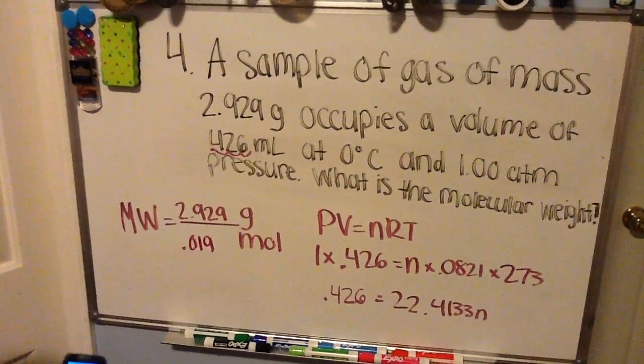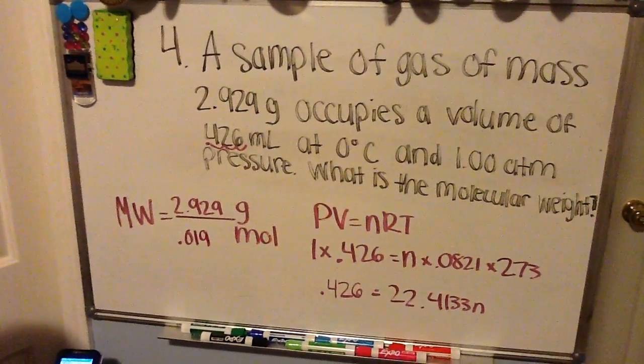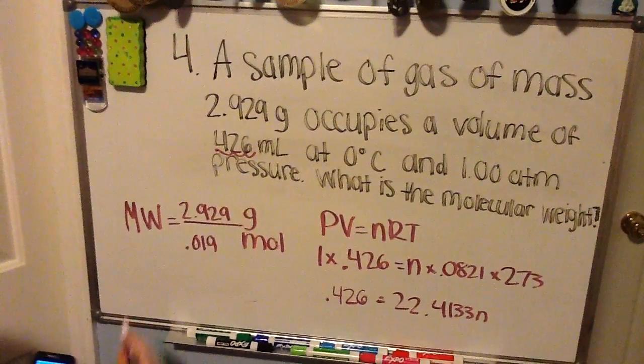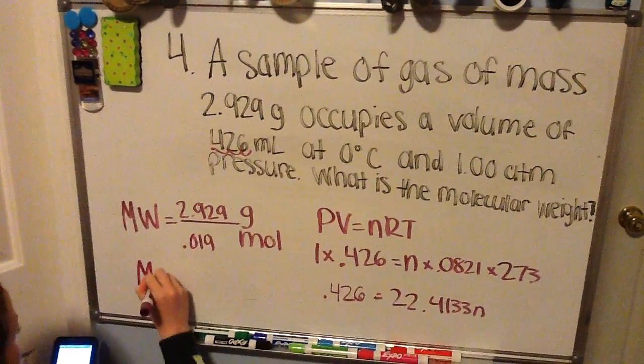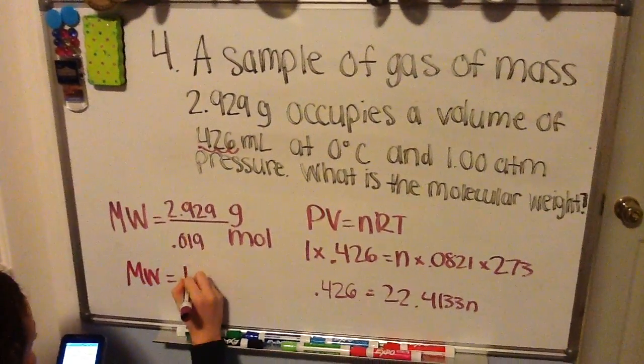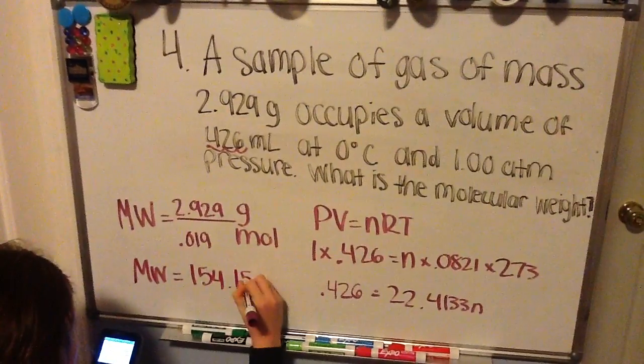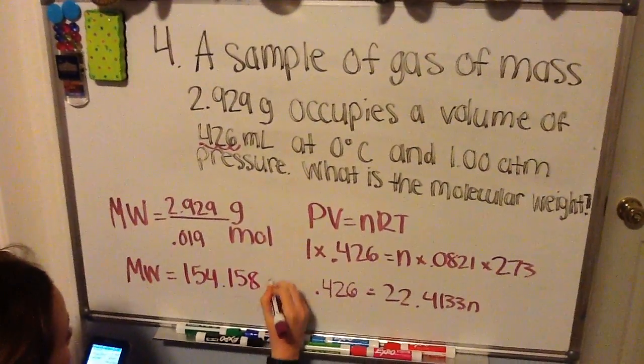So now you're just going to divide your grams by your moles, and your molecular weight equals 154.158 grams per mole.